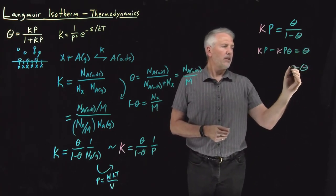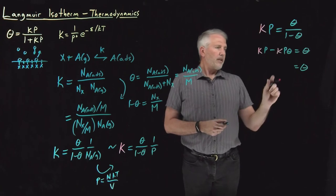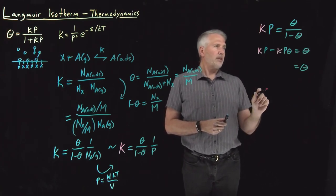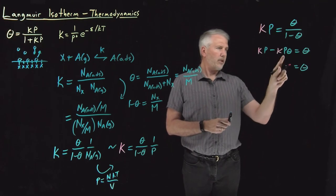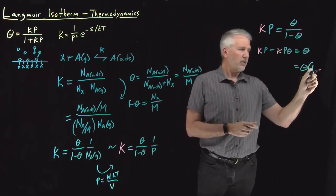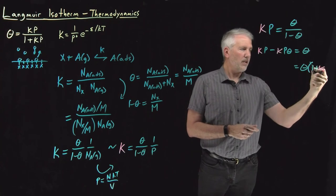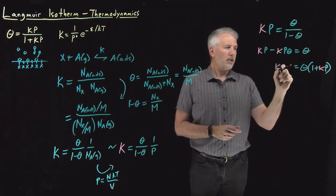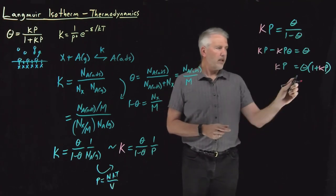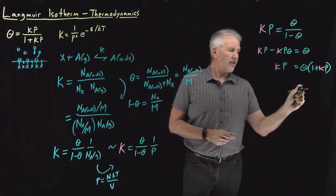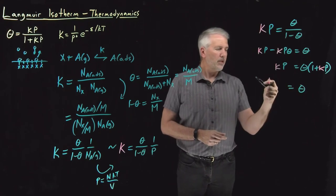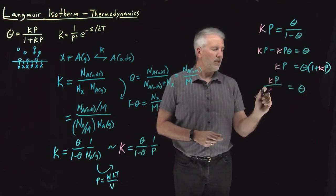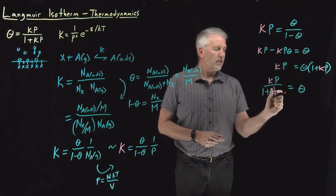So theta ends up being equal to Kp. So I bring the Kp over here. Theta times 1 plus Kp is equal to K times p over here. And now if I've kept all that straight, what I find is that theta is equal to Kp over this quantity in parentheses, 1 plus K times p.